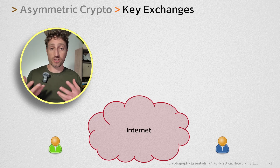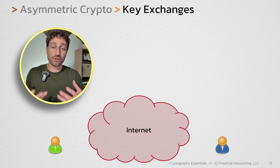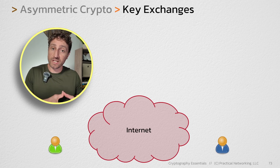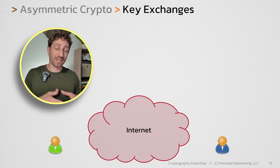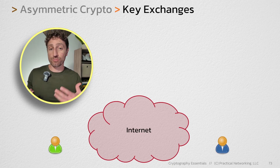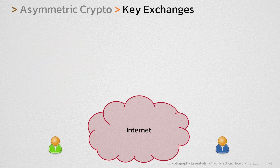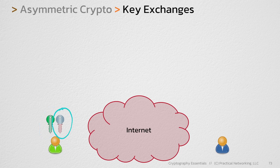First, we need confidentiality. This ensures that whatever is sent is only readable by these two users. And second, we need integrity. This ensures that whatever is sent cannot be changed or modified in transit on the wire. We can get confidentiality by using symmetric encryption, and this is going to require a secret key. And we can get integrity by using a message authentication code, and this will also require a secret key.